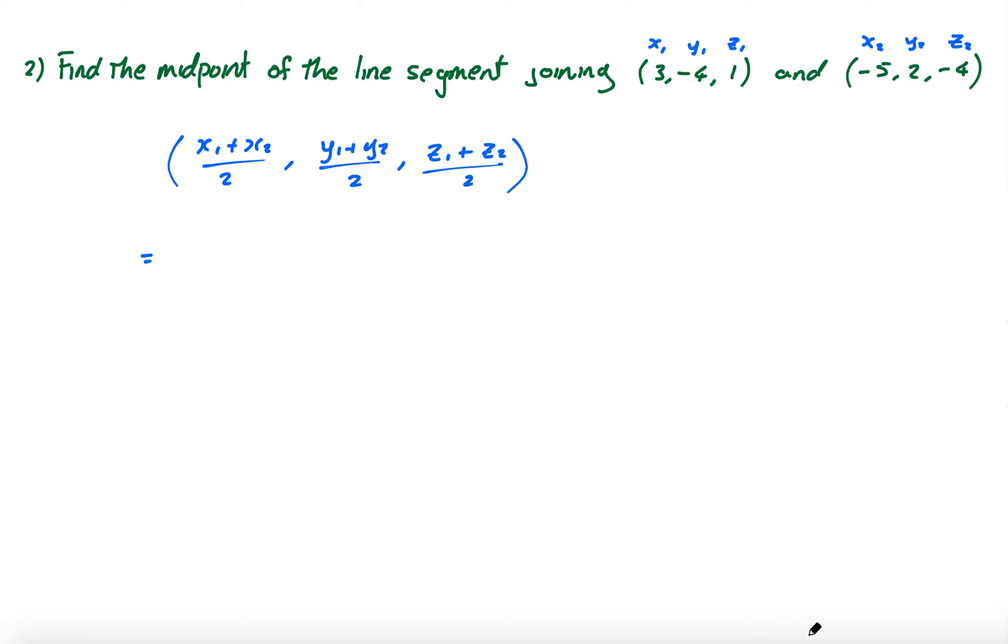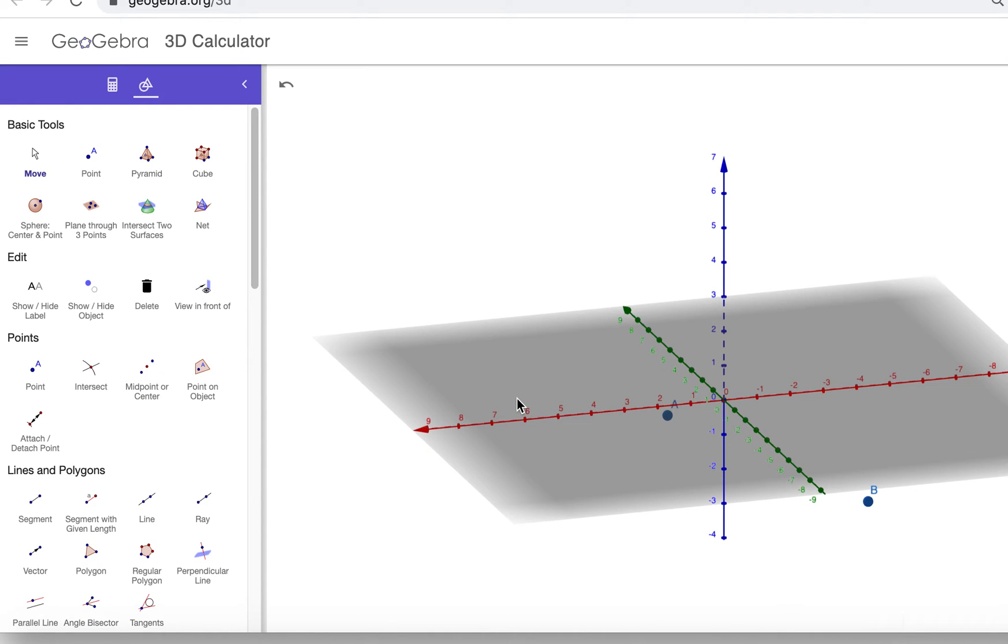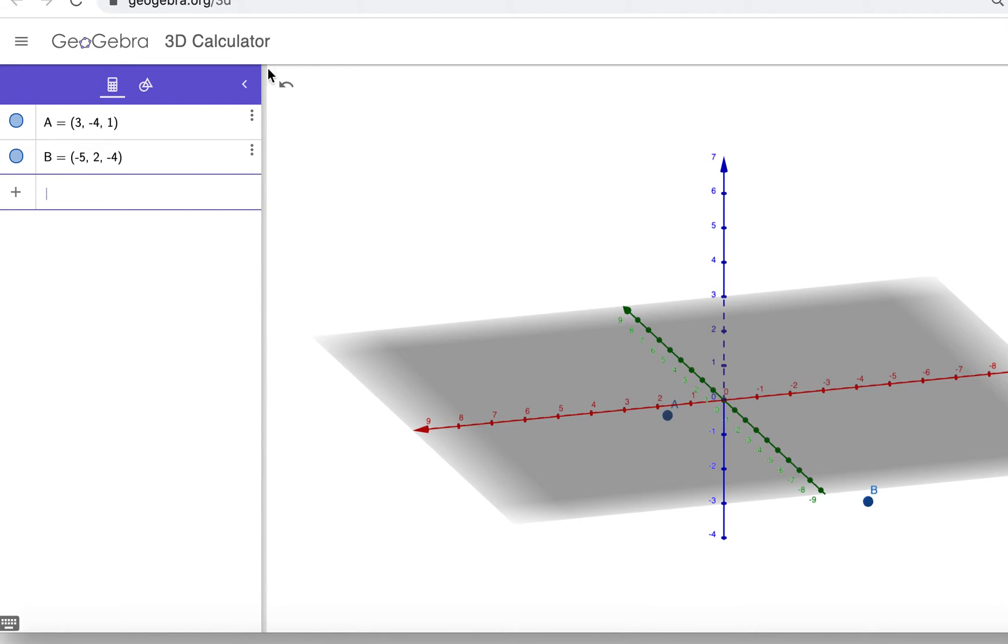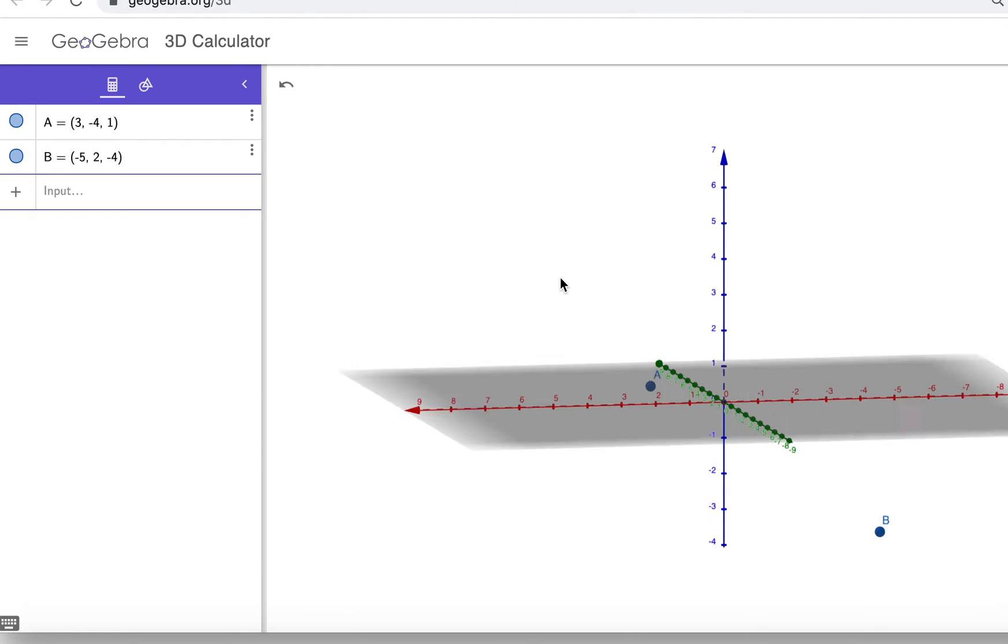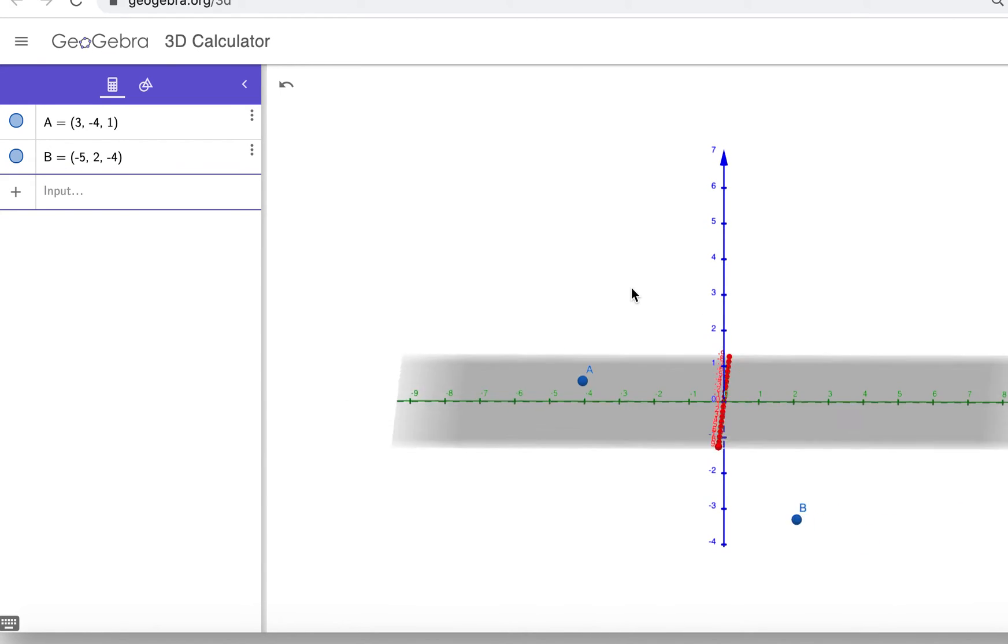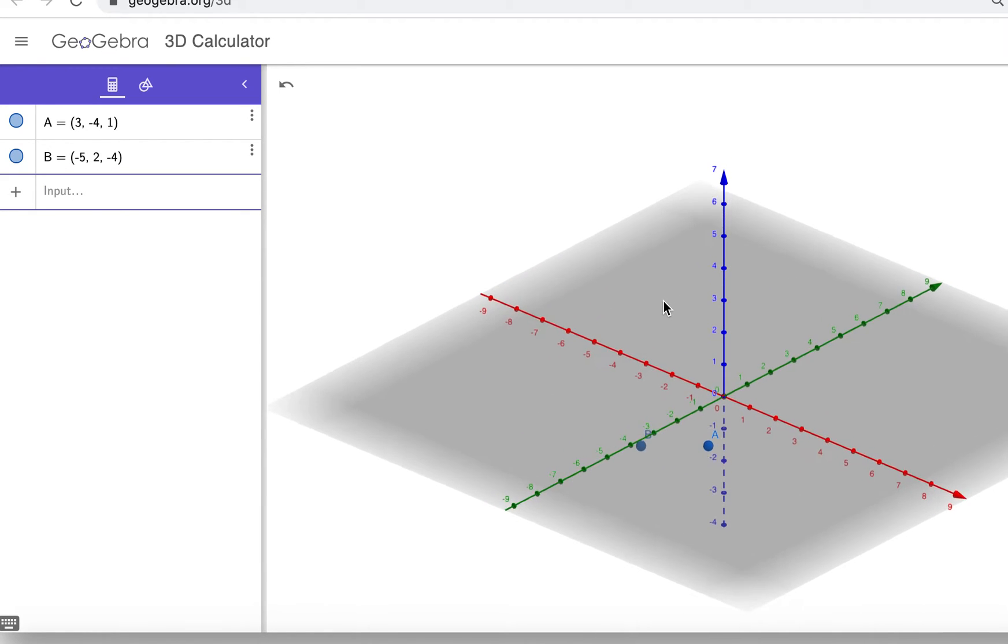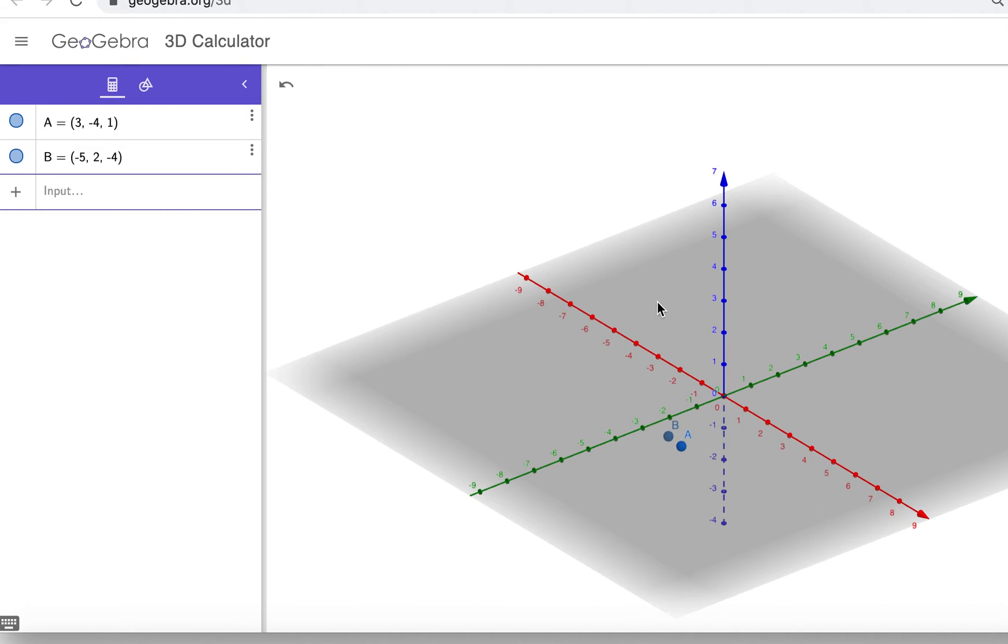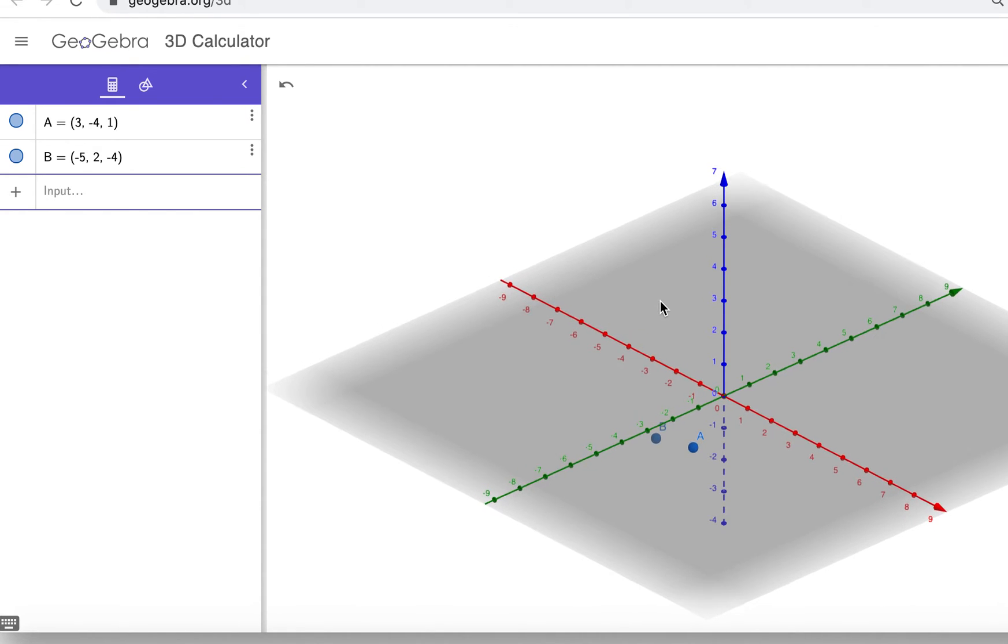Now before we do it, let's have a look at GeoGebra. Now I've put in the two points here. So remember you can go here to geogebra.org if you want to play around. I've put in my two points a, b. There's 3 negative 4, 1 and negative 5, 2 negative 4.